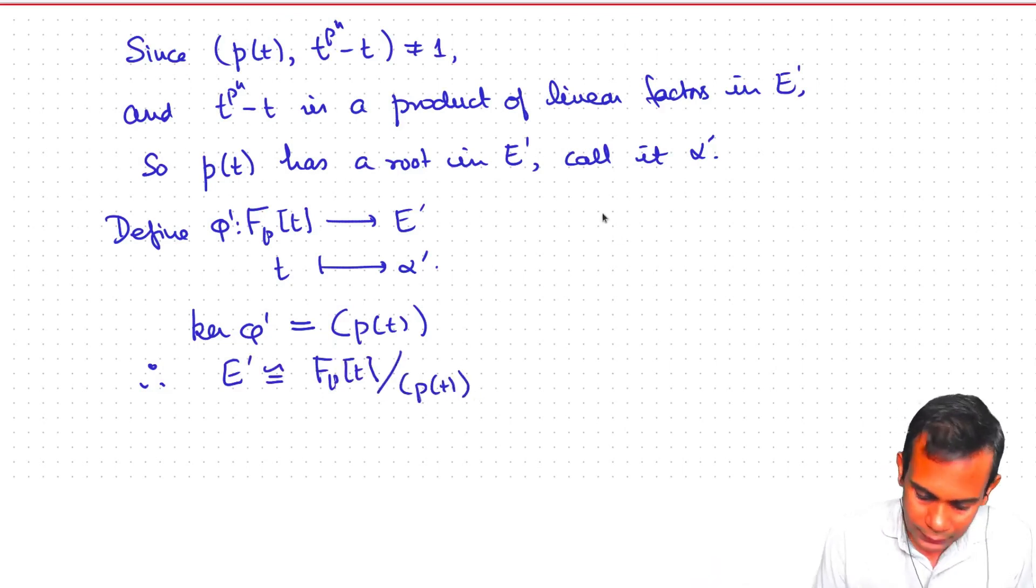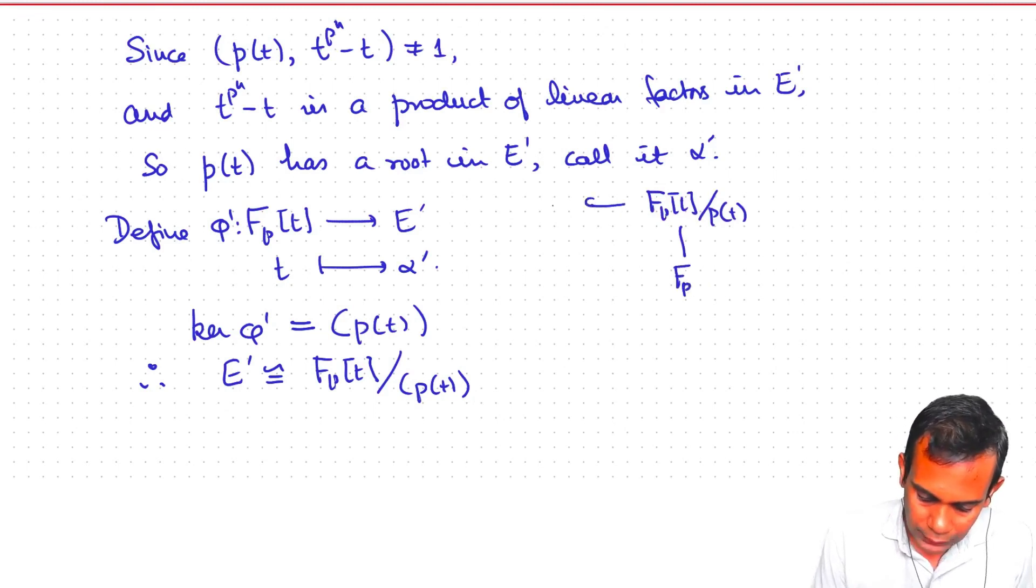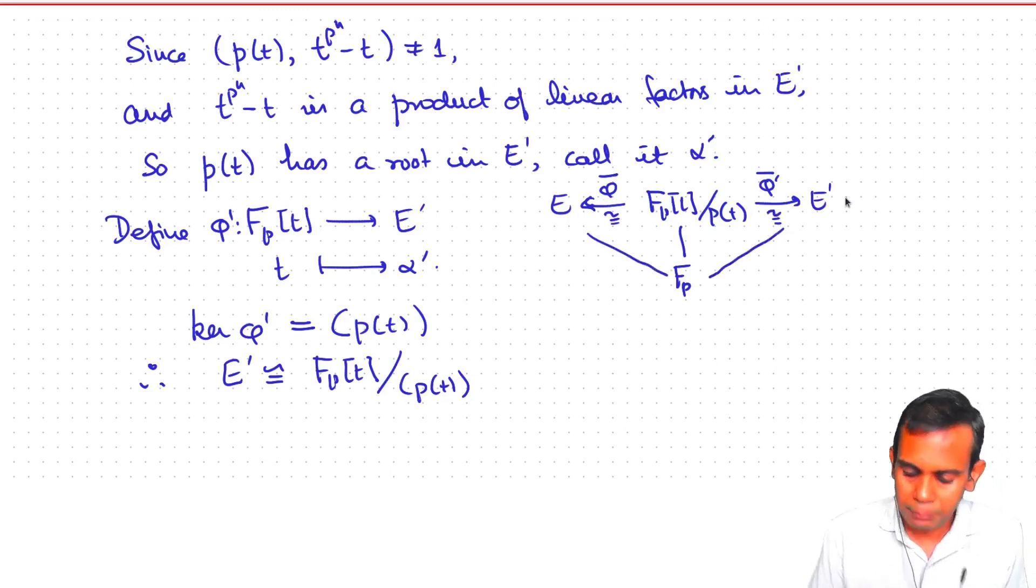And so what we have is Fp[T] mod Pt. This over Fp is isomorphic to E on the one hand via phi bar and isomorphic to E prime on the other hand via phi prime bar, which means that E and E prime are isomorphic via, say, phi prime bar circle phi bar inverse. And that proves the theorem.